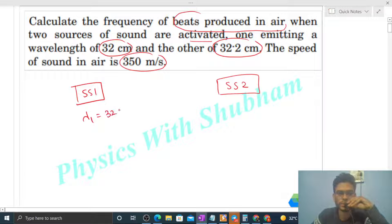We have lambda one that is 32 centimeter, and lambda two that is 32.2 centimeter, right? And the speed of sound, that will be the same - so speed of sound is 350 meter per second for both sound sources.